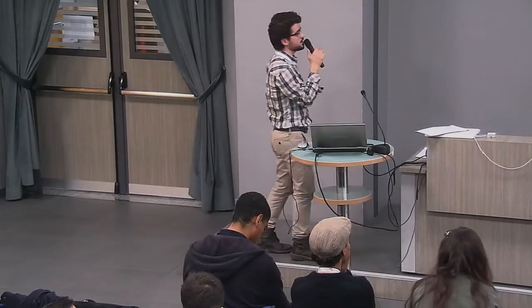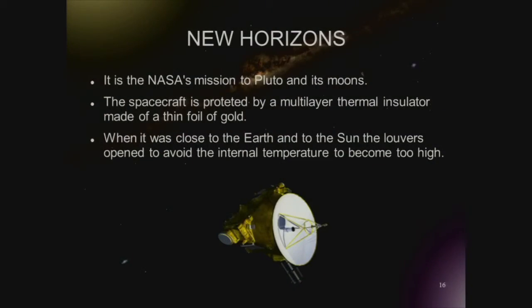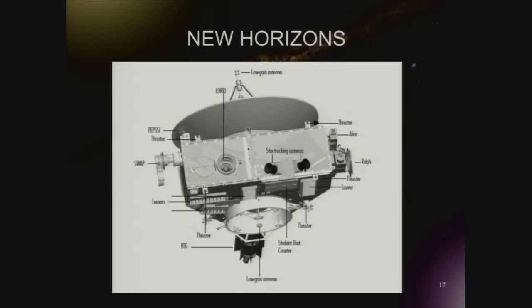One of the most famous missions, New Horizons, was launched in 2006 by NASA for studying Pluto, Charon, and other moons. We can see here the louvers — the blade we saw before — and the gold coating for protection. The louver rotates when the spacecraft is close to the Earth for the albedo effect or close to the sun.